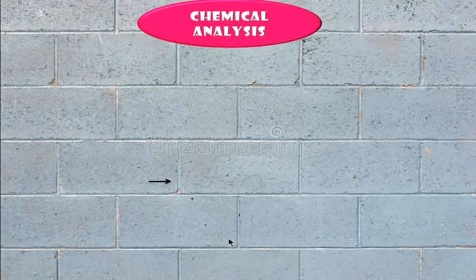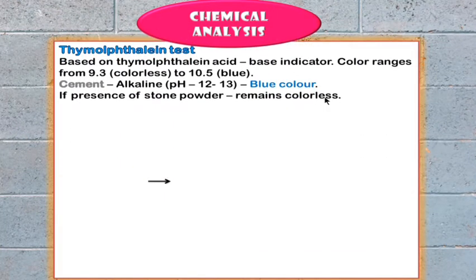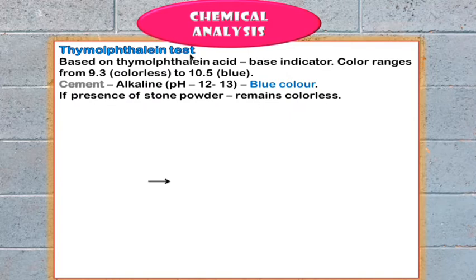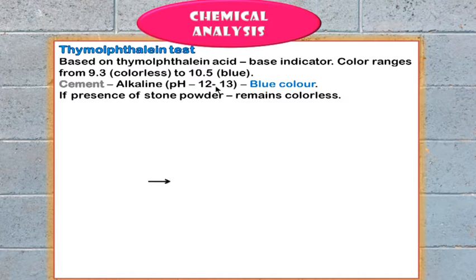Now, chemical analysis. First, the thymolphthalein test, where thymolphthalein is used as an acid-base indicator. Its color ranges from colorless in acidic conditions to blue in basic conditions. Cement is alkaline with a pH of 12 to 13, so it turns blue. If stone powder adulteration is present, it remains colorless — allowing detection of adulteration.